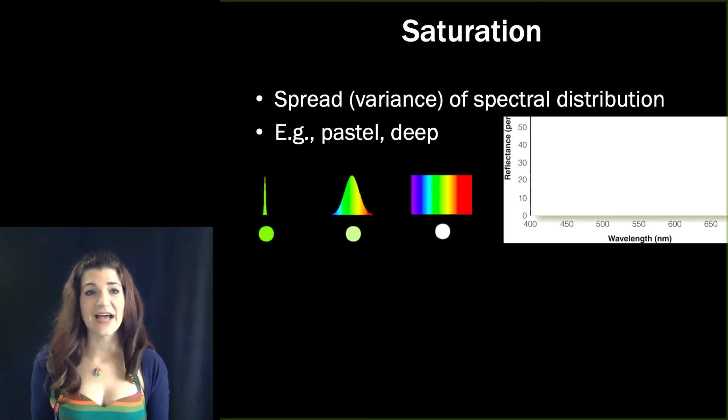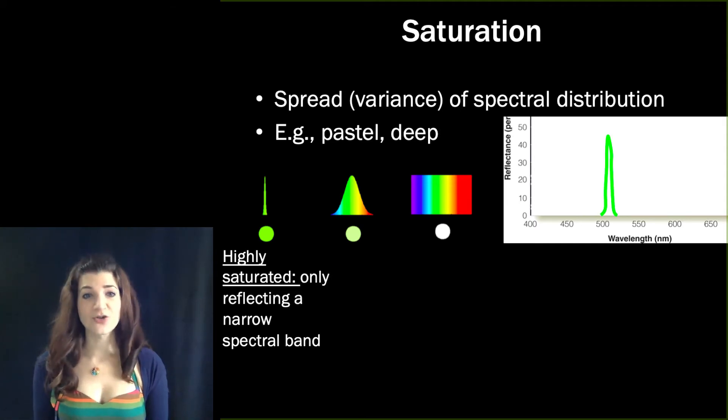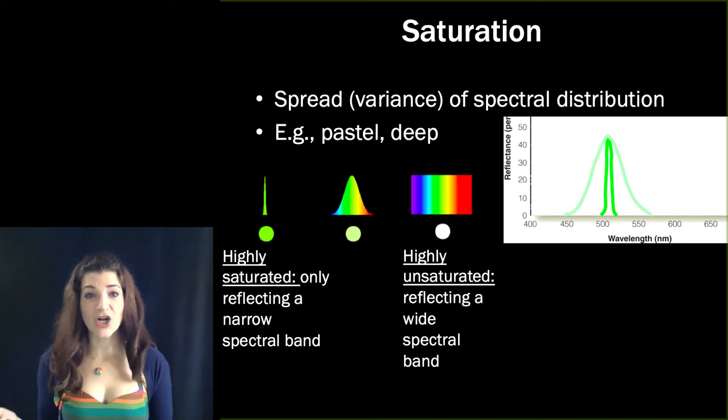Colors that are highly saturated are reflecting only a very narrow spectral band. Highly unsaturated colors are reflecting a much wider spectral band.